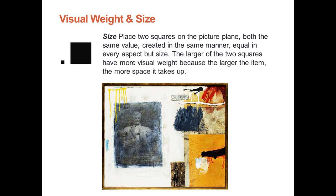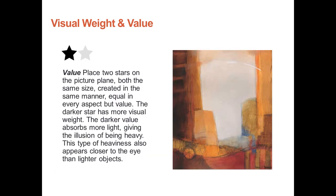A larger item appears closer to the eye. In the example shown, which side demonstrates size as visual weight? Visual weight and value: place two stars on a picture plane, both the same size and created in the same manner, equal in every aspect but value. The darker star has more visual weight — the darker value absorbs more light, giving the illusion of being heavier. This type of heaviness also appears closer to the eye. Which side of the vertical axis is showing visual weight using value?